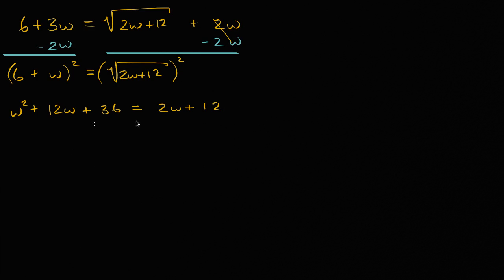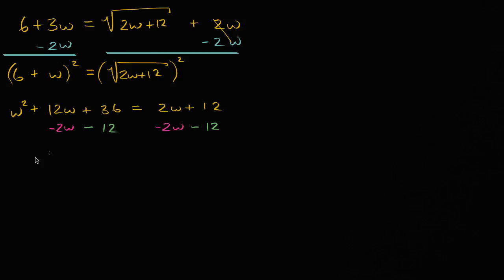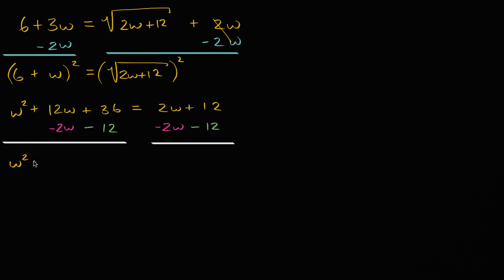Now we can subtract two w and 12 from both sides to get into standard quadratic form. So let's subtract two w from both sides and subtract 12 from both sides. I am going to be left with w squared — 12w minus two w is plus 10w, and 36 minus 12 is plus 24 — is equal to zero.